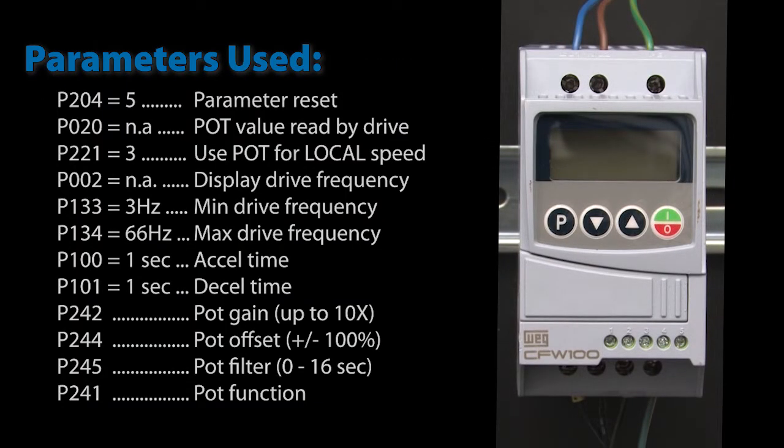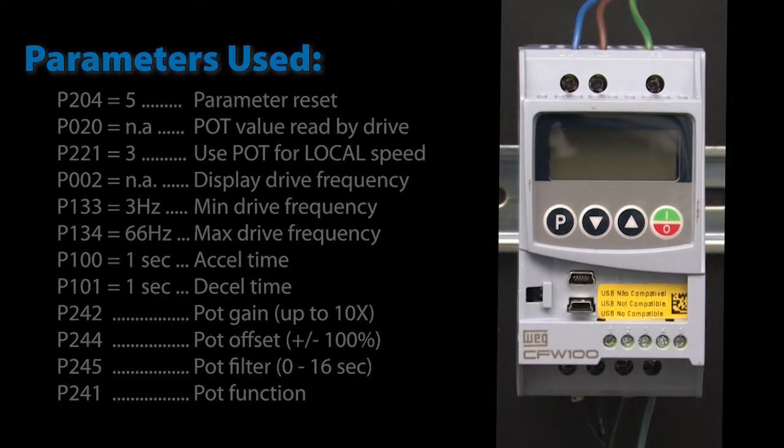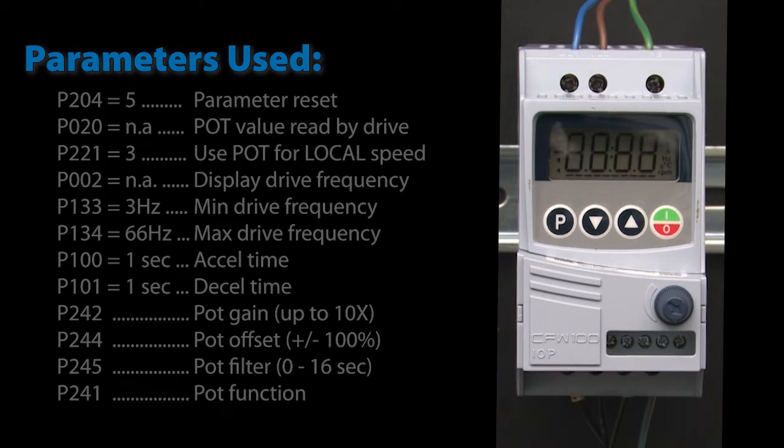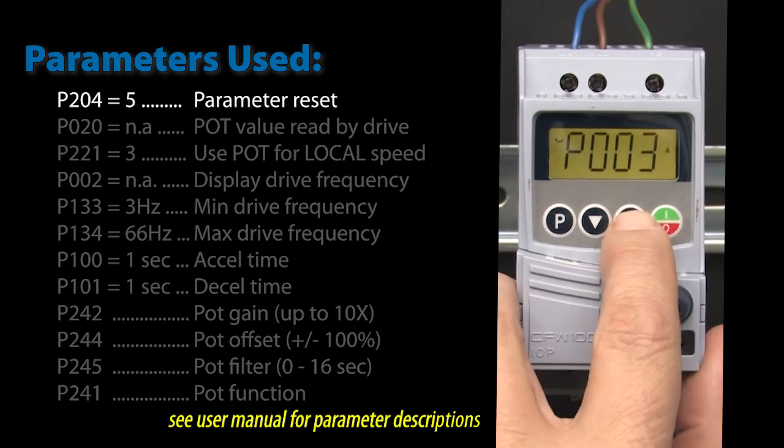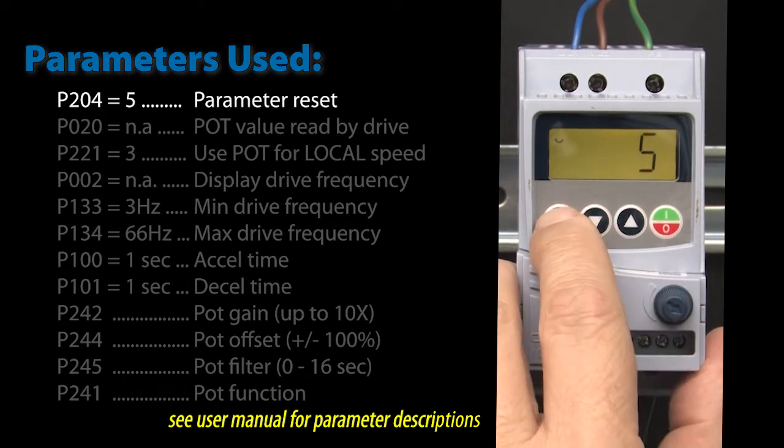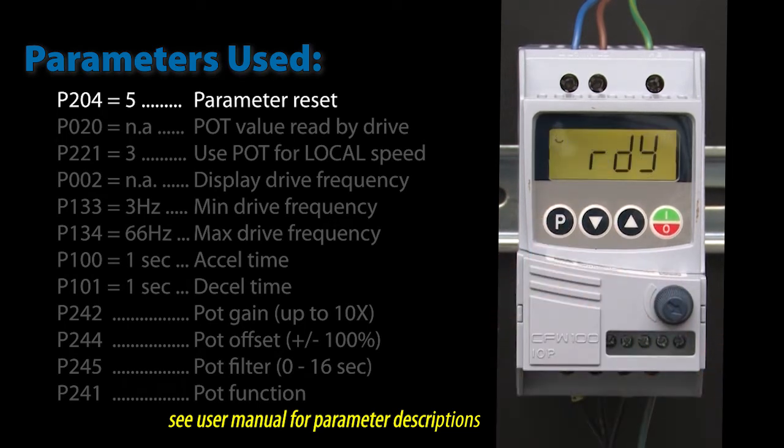With the power removed from the drive, remove the faceplate and plug in the potentiometer module. Apply power to the drive. Let's go to parameter 204 and enter a 5 to reset the drive parameters to factory default so we're all starting from the same place.